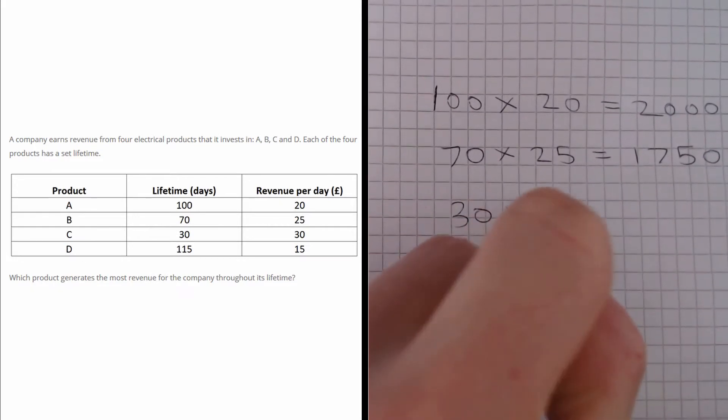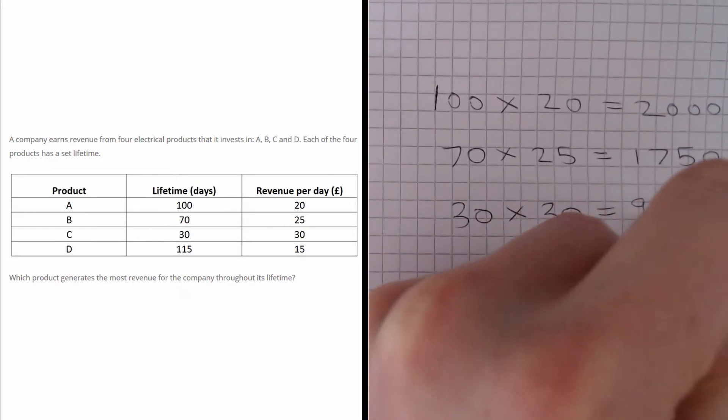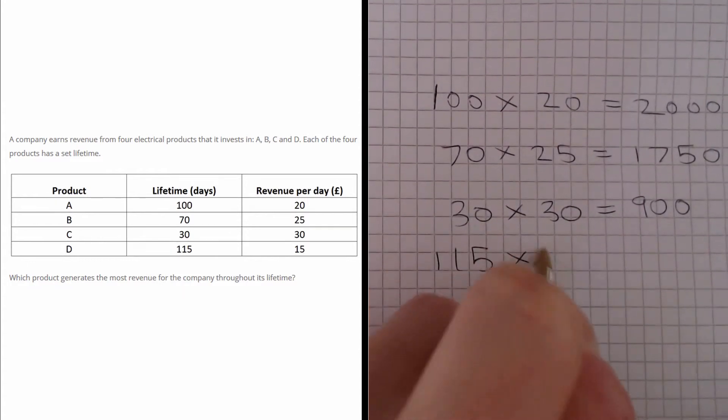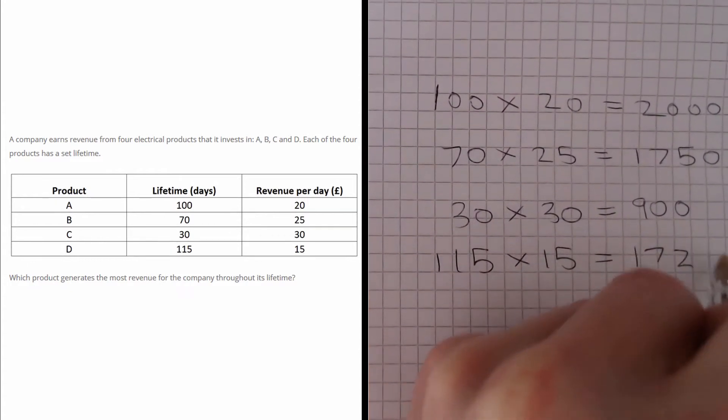For C, we are going to get 30 multiplied by 30 which is 900, and for D, we are going to get 115 multiplied by 15 which is 1725.